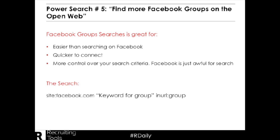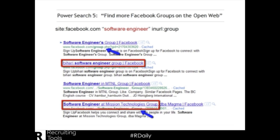For our example, we're going to look for a software engineer. And here are our results. You can see right there — software engineers groups. And that's where we're going to find our candidates.